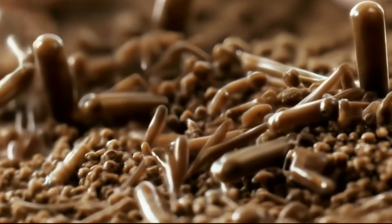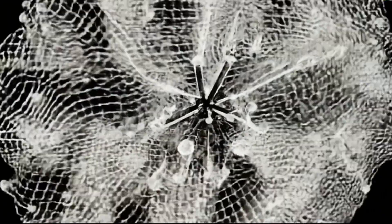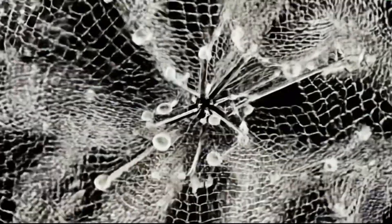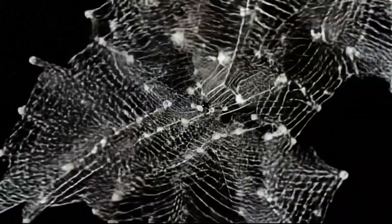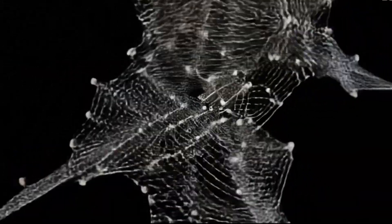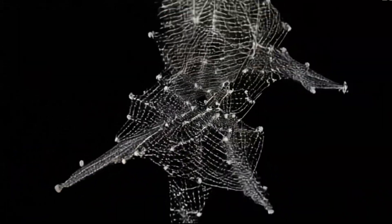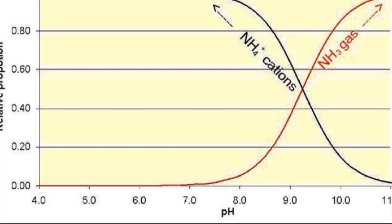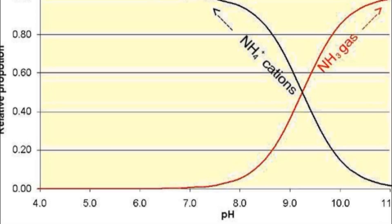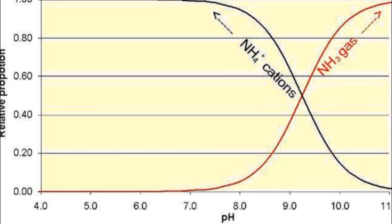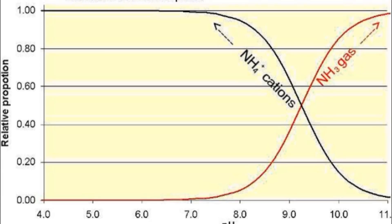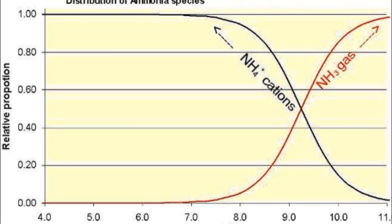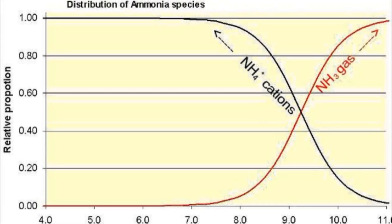Nitrogen is converted from nitrates and nitrites, which are forms of nitrogen easily absorbed by plants and constitute their main source of nitrogen. The nitrification reaction can only occur in aerobic conditions and at the appropriate pH, because low pH inhibits both phases of nitrification.